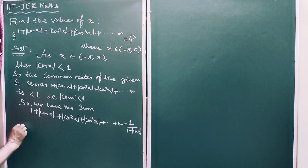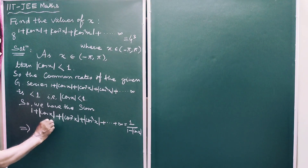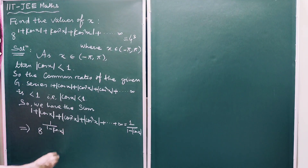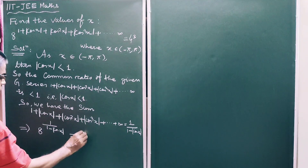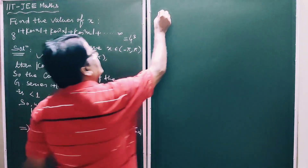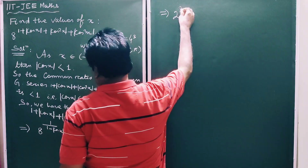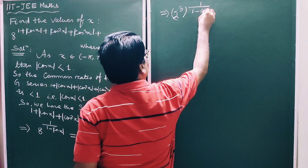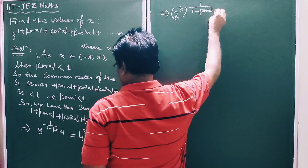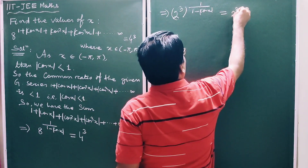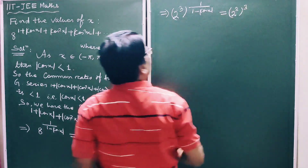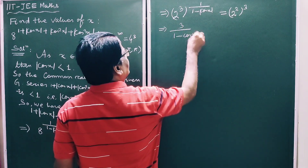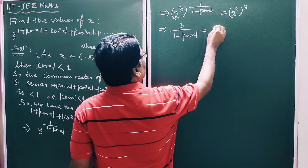This implies 8 to the power of 1 divided by (1 minus |cos x|) is equal to 64. This implies 2 cubed to the power of 1 divided by (1 minus |cos x|) is equal to 2 to the power 6. So 3 divided by (1 minus |cos x|) is equal to 6.